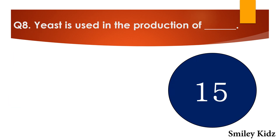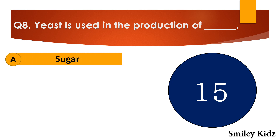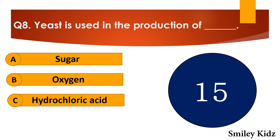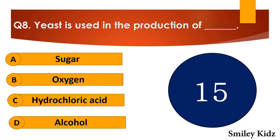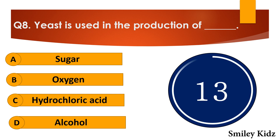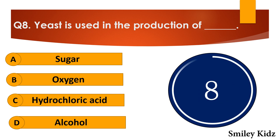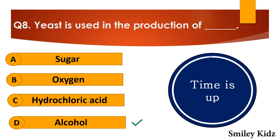Question number eight: Yeast is used in the production of dash. The options are: A. Sugar, B. Oxygen, C. Hydrochloric acid, or D. Alcohol. Your time starts now. Your time is up and the right answer is option D — alcohol. Yeast is used in the production of alcohol.